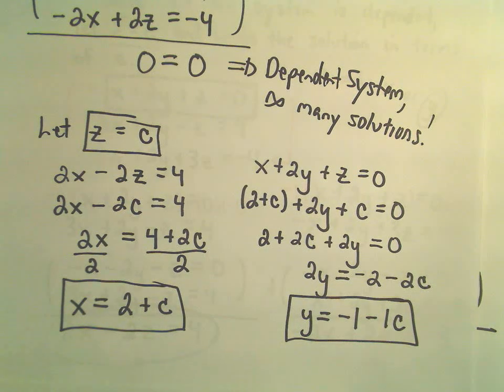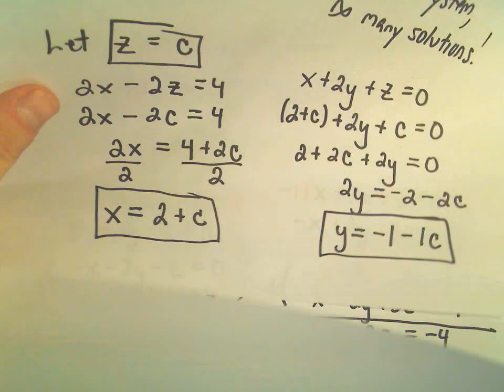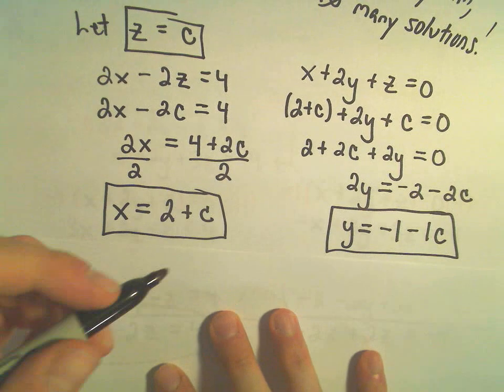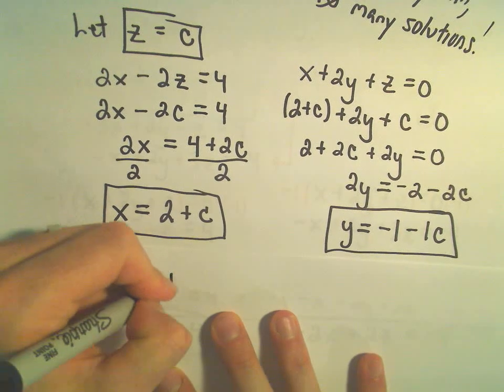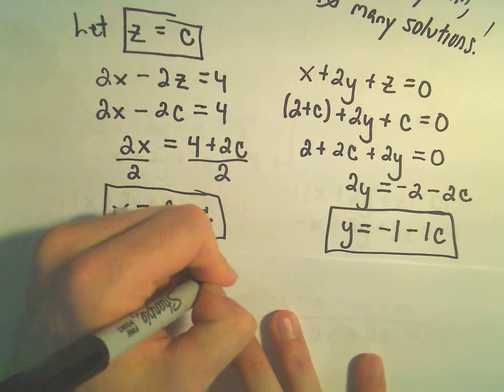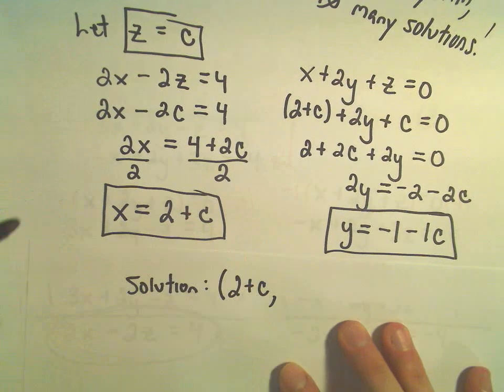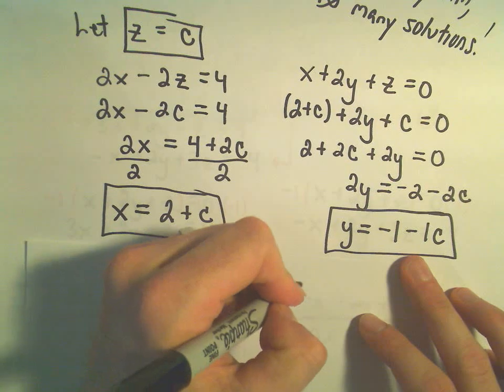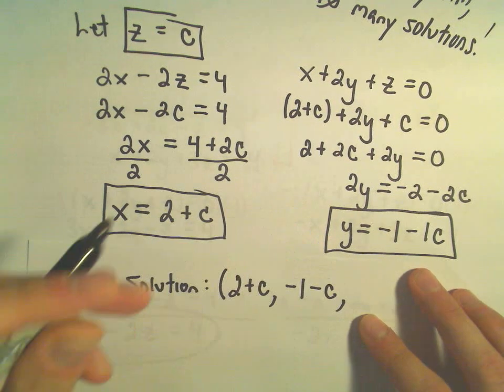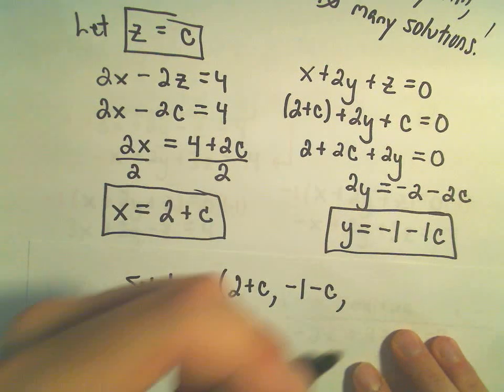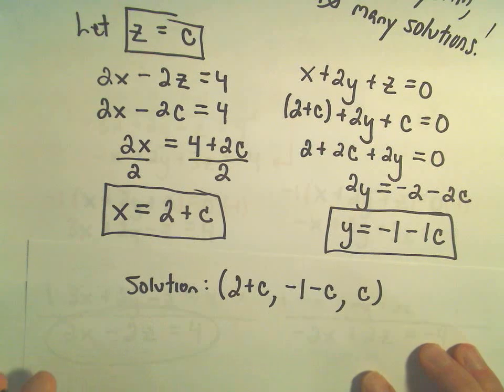We can now write this. We can say our solution. Well, x, we figured out, would be the value 2 plus c. Y, we said, would be negative 1 minus c. And then we said z, we're just letting that equal c. Okay, so again, this now says we have infinitely many solutions.